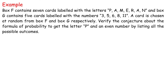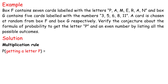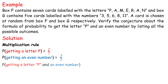Example: Box F contains seven cards labeled with the letters P, A, M, E, R, A, N and Box G contains five cards labeled with the numbers 3, 5, 6, 8, 11. A card is chosen at random from Box F and Box G respectively. Verify the conjecture about the formula of probability to get the letter P and an even number by listing all the possible outcomes. Solution - Multiplication rule: P(getting a letter P) equals 1 over 7. P(getting an even number) equals 2 over 5. P(getting a letter P and an even number) equals 1 over 7 times 2 over 5 equals 2 over 35.